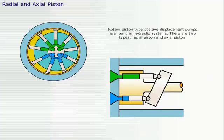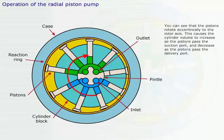Rotary piston type positive displacement pumps are found in hydraulic systems. There are two types, radial piston and axial piston. You can see that the pistons rotate eccentrically to the rotor axis. This causes the cylinder volume to increase as the pistons pass the suction port and decrease as the pistons pass the delivery port.